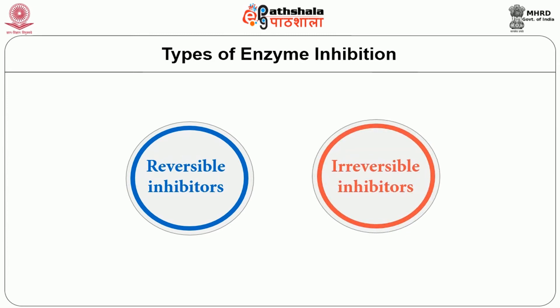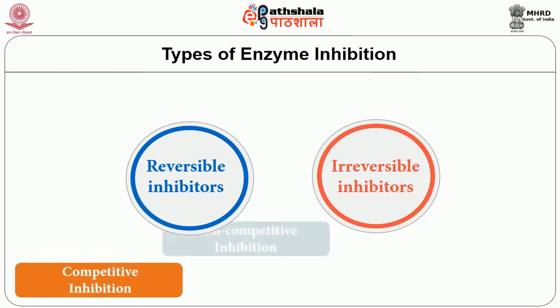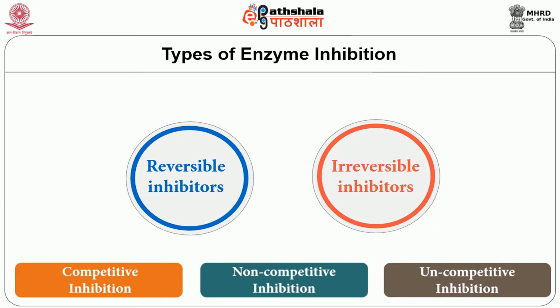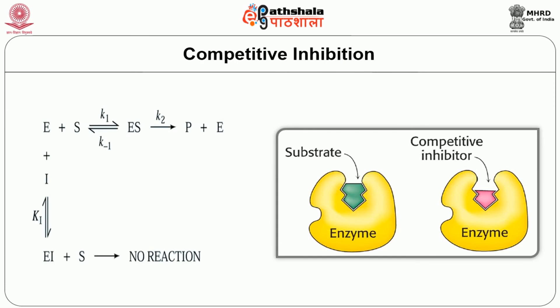Competitive inhibition: an enzyme normally binds its substrate to form an enzyme-substrate complex, releasing product and free enzyme. A competitive inhibitor competes with the substrate for the active site. As shown in the figure, the substrate is grey and the competitive inhibitor is pink. The competitive inhibitor is analogous in structure to the substrate, so it effectively competes for the active site. When the inhibitor binds to the active site, the substrate cannot bind, and no reaction takes place.